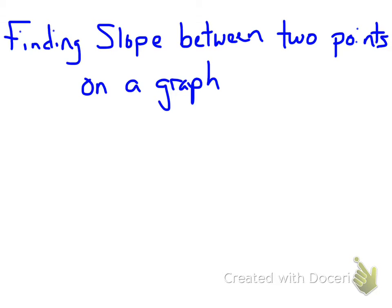Slope is always considered to be the letter M in our equations, and slope is the change in Y, or delta Y, divided by the change of X.